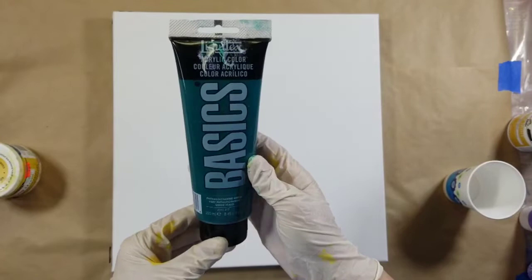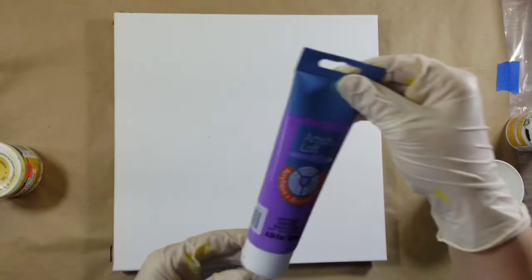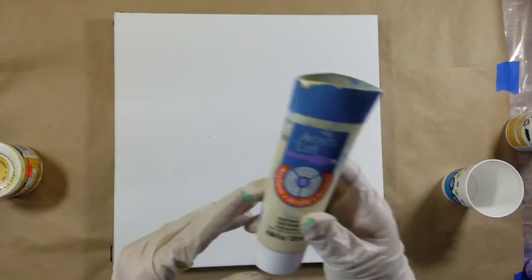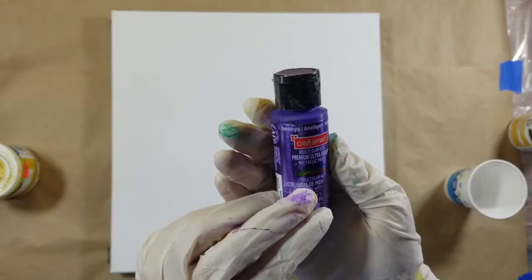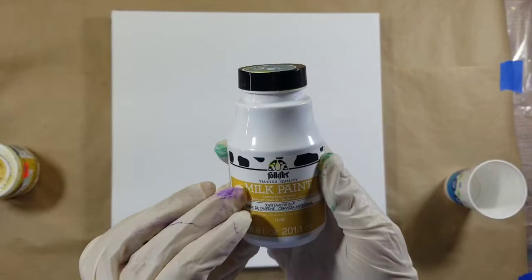The first color I have is this Liquitex Basics in Phthalo Green. And then I've got the Artist Loft in Light Violet. Another Artist Loft color is this in Parchment.